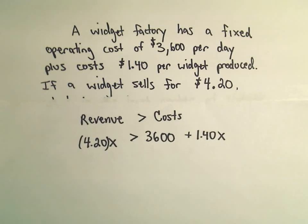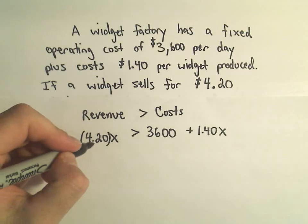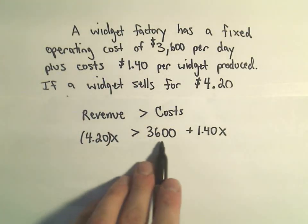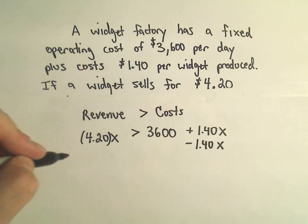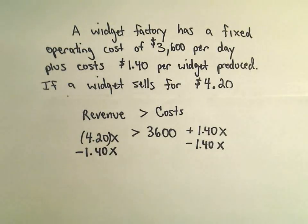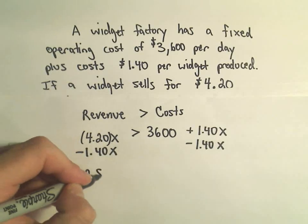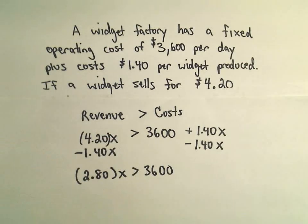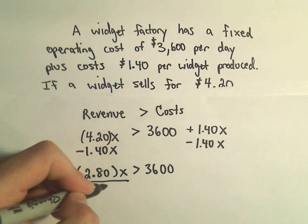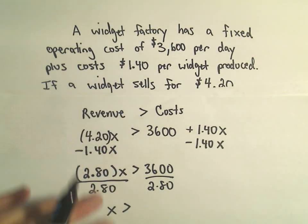So now I've got a nice little inequality set up that I can solve. It says we have 4.20 times x, and that's going to be greater than 3,600 plus 1.40x. I'm going to subtract the 1.40x from both sides. So $4.20 take away $1.40 is going to be $2.80, and that needs to be bigger than 3,600. Now I'm just going to divide both sides by 2.80, and that pretty much gets us there.